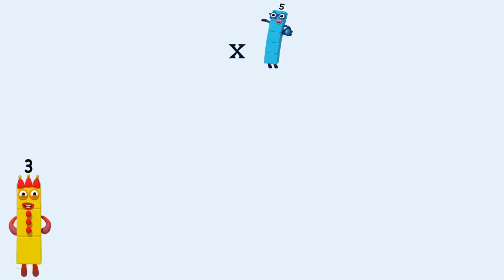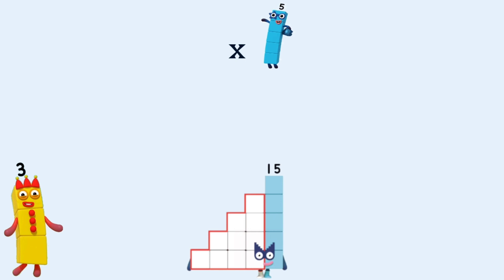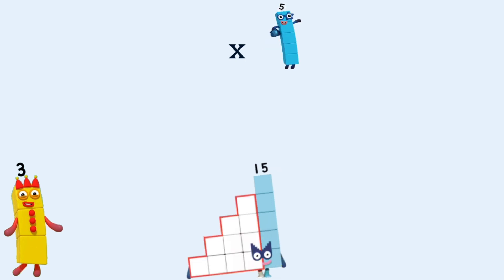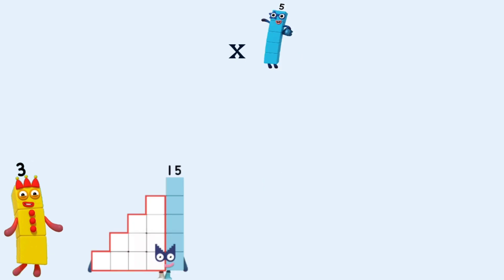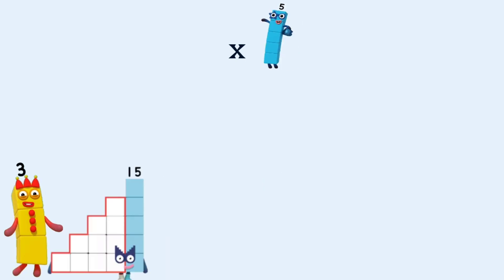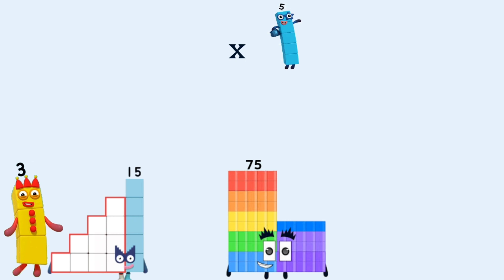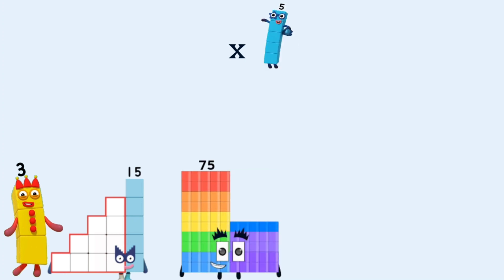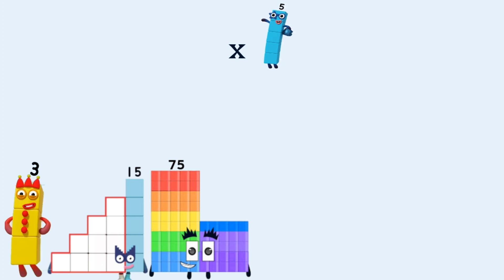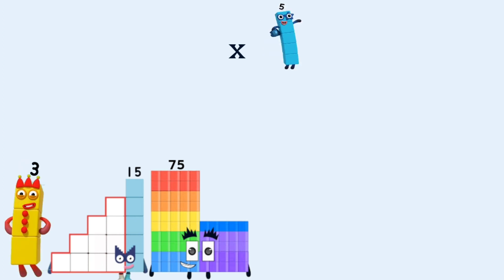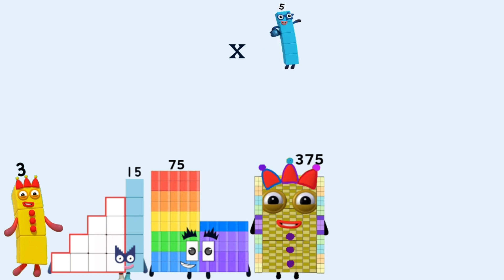3 times 5 equals 15. 15 times 5 equals 75. 75 times 5 equals 375.